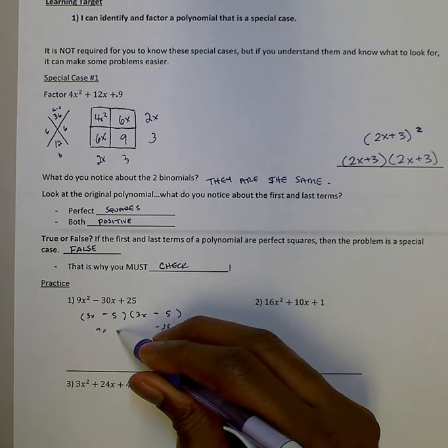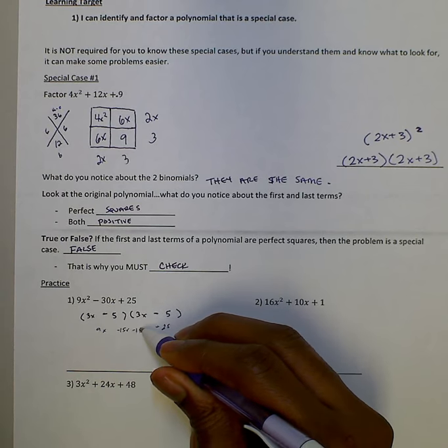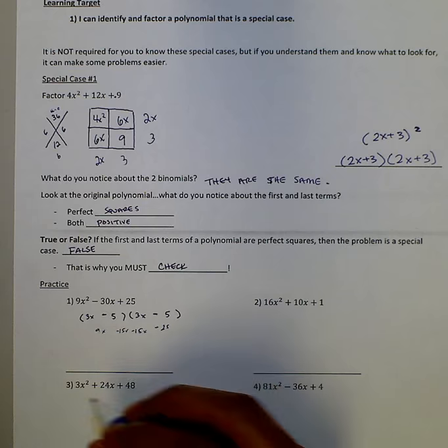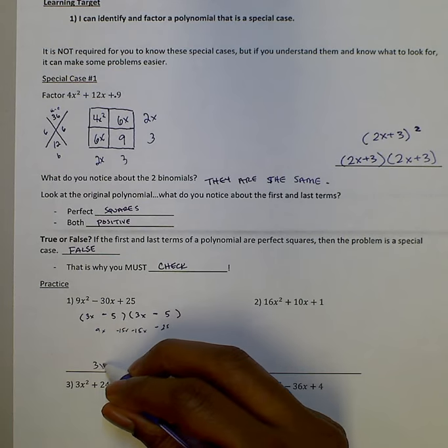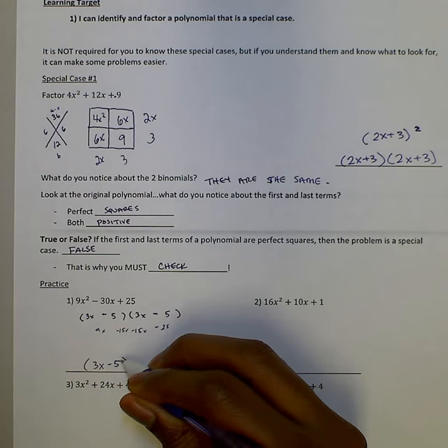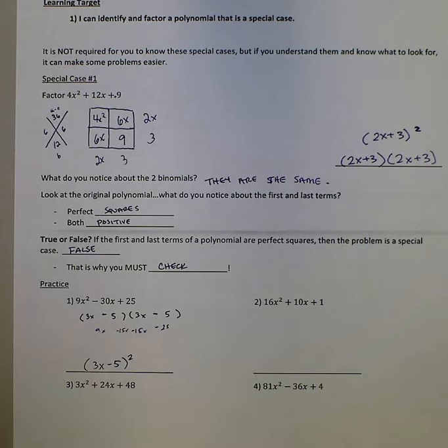That would be negative 15x, negative 15x. And so this one works out. So we have 3x minus 5 squared. And that shortcut did save us some time.